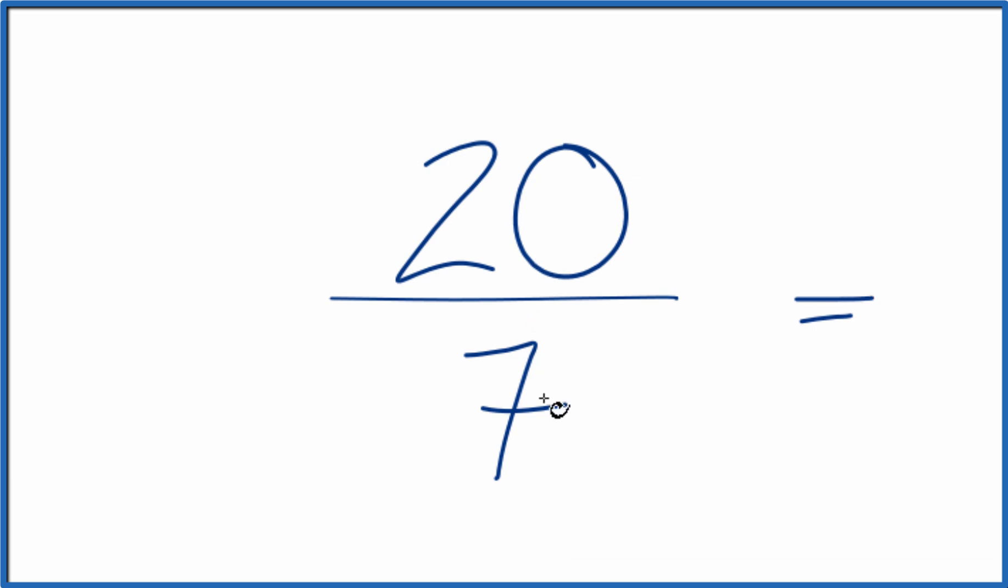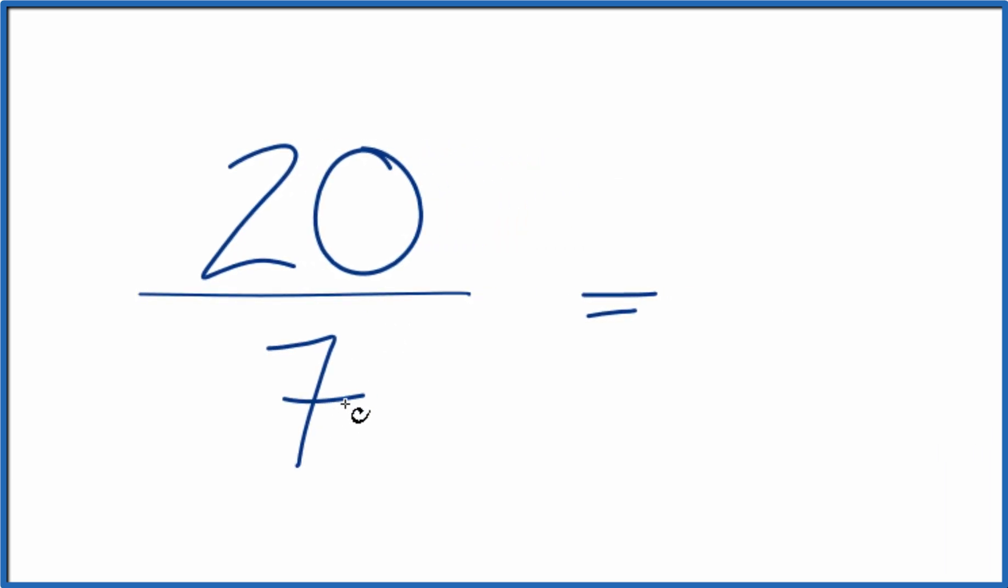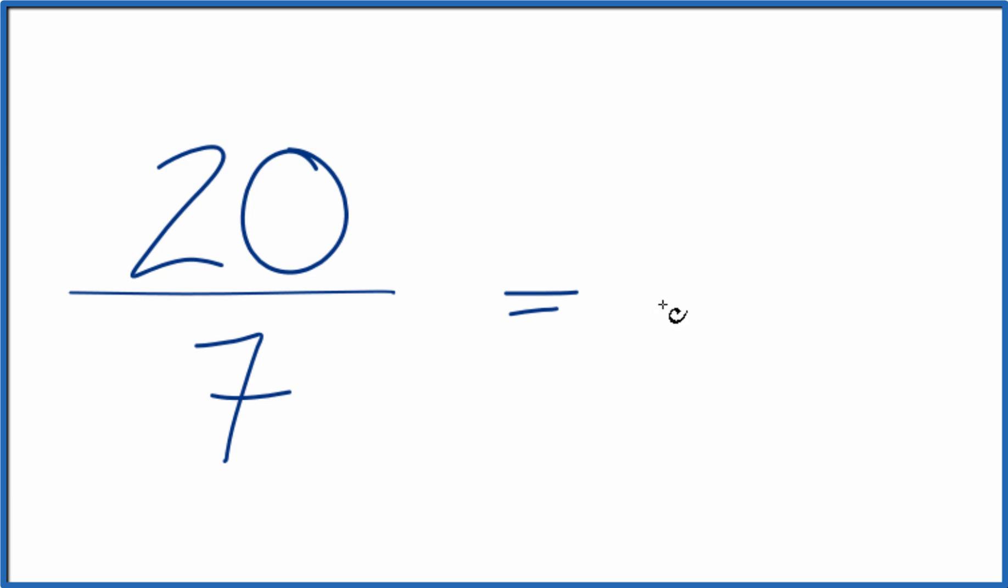7 goes into 20... 7 times 3 is 21, that's too big. But 7 times 2 is 14, with 6 left over, then we bring the 7 across.